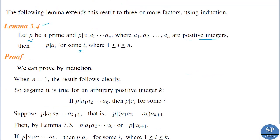First, when n = 1, we have to show that p is a prime and p divides a₁·a₂·…·aₙ implies p divides aᵢ for some i. If n = 1, then a₁·a₂·…·aₙ is nothing but a₁ itself, so p divides a₁. So the result is true for n = 1 clearly.